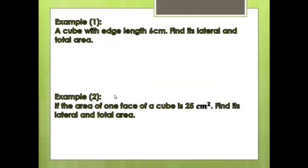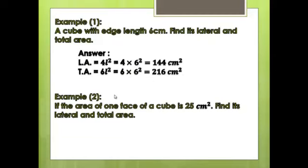Example 1: A cube with each edge length equal to 6 cm. Find its lateral and total area. We have L = 6. Lateral area = 4L² = 4 × 6² = 4 × 36 = 144 cm².